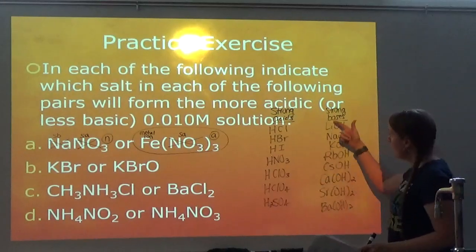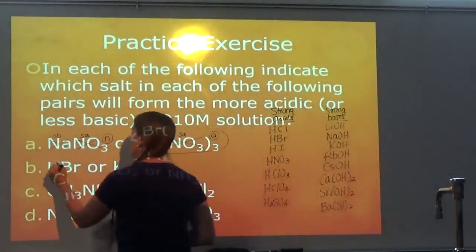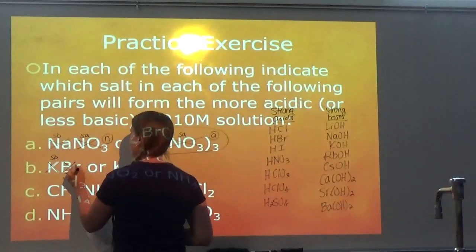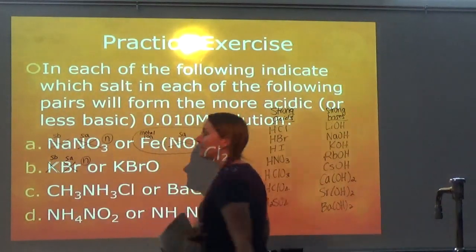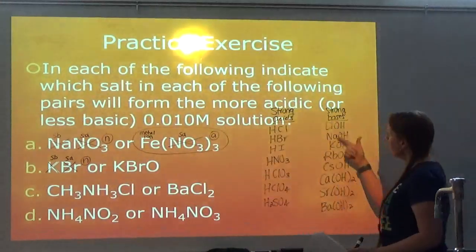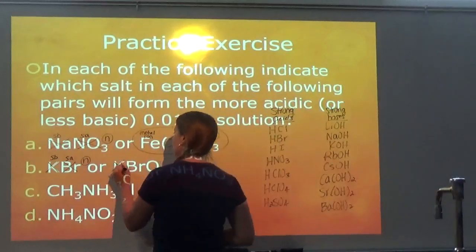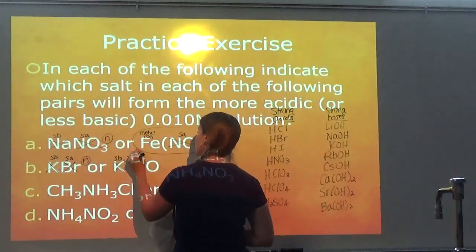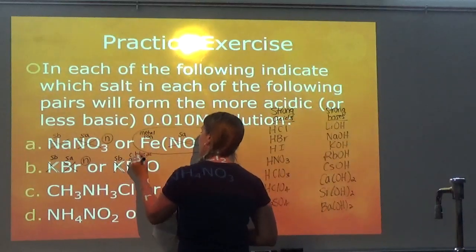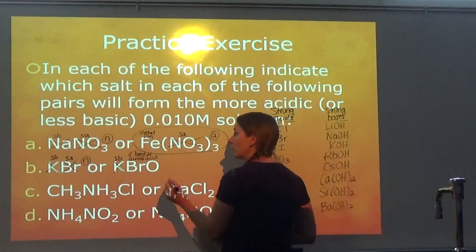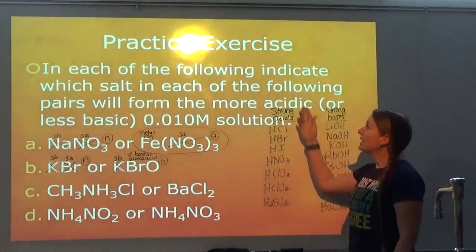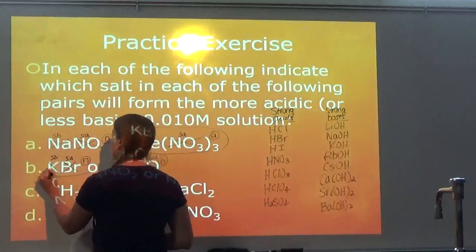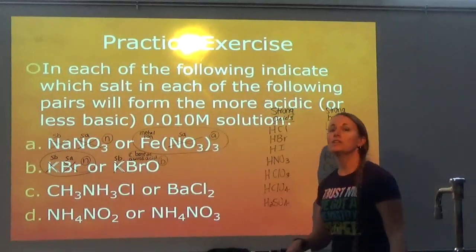For Part B, comparing KBr and KBrO: K comes from a strong base so it does not affect the pH; Br⁻ comes from a strong acid so it does not affect pH — KBr is neutral. K again comes from a strong base so it does not affect. BrO⁻ does not come from a strong acid — it comes from a weak acid — so it is the conjugate base of a weak acid, making that solution basic. Between neutral and basic, the more acidic one is KBr (the neutral solution).